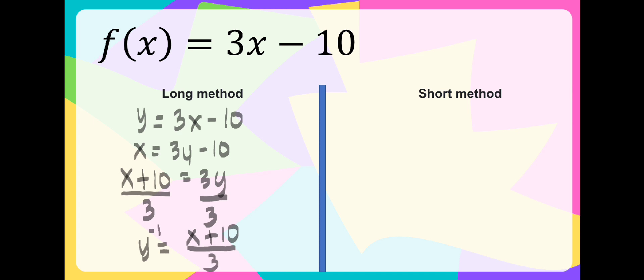For the short method, we are going to use this formula: f inverse of x is equal to x minus b over a, wherein a and b are the numerical coefficients in the given function.